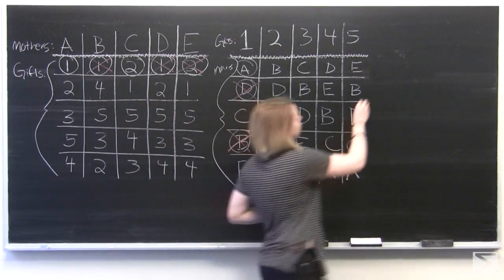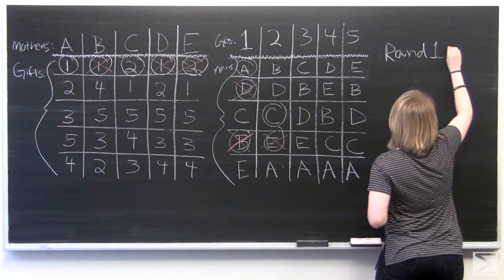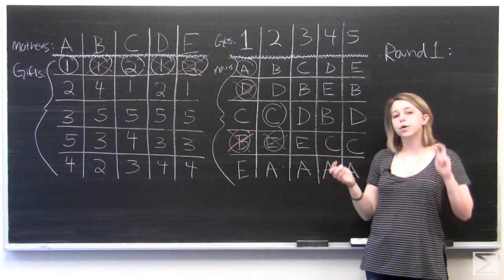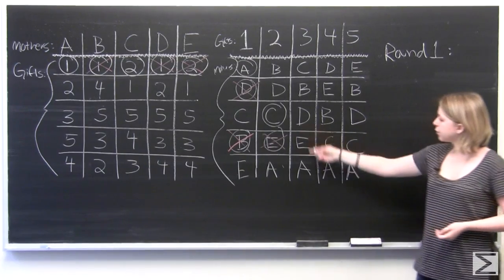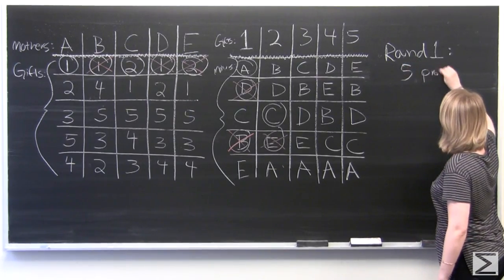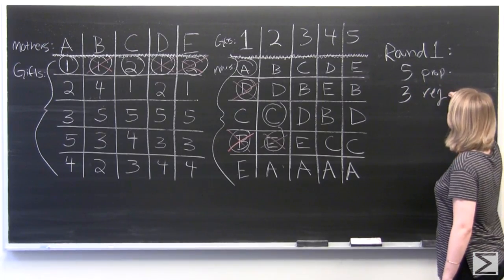So in round one, we've had five different proposals. We've got the mothers proposing which gift they would like to have, and we've got three rejections. Five proposals and three rejections.